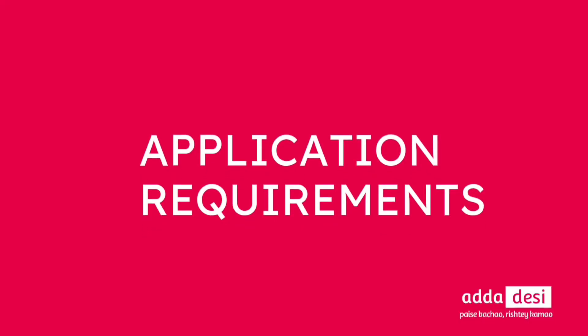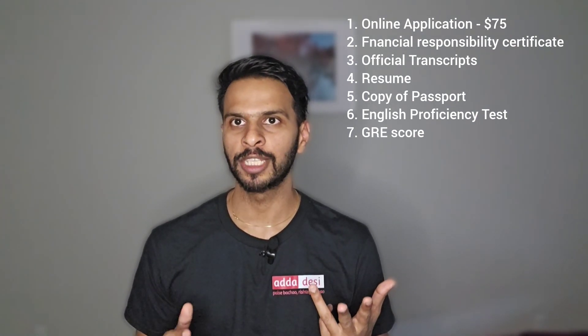Let's start with the application requirements. There are a total of seven application requirements at Wichita State University. First, an online application that costs around $75. Second, a certificate of financial responsibility. Third, official transcripts. Fourth, a resume. Fifth, a copy of your passport. Sixth, an English proficiency test — that is your IELTS, TOEFL, or PTE score. And seventh, a GRE score.